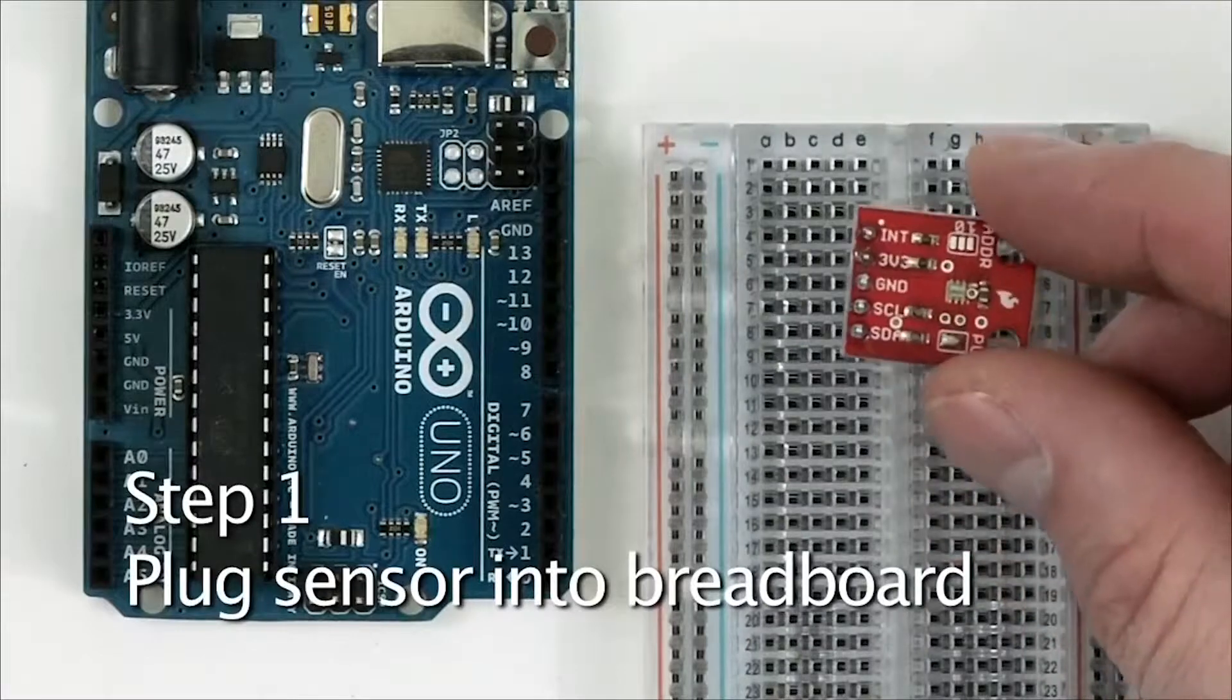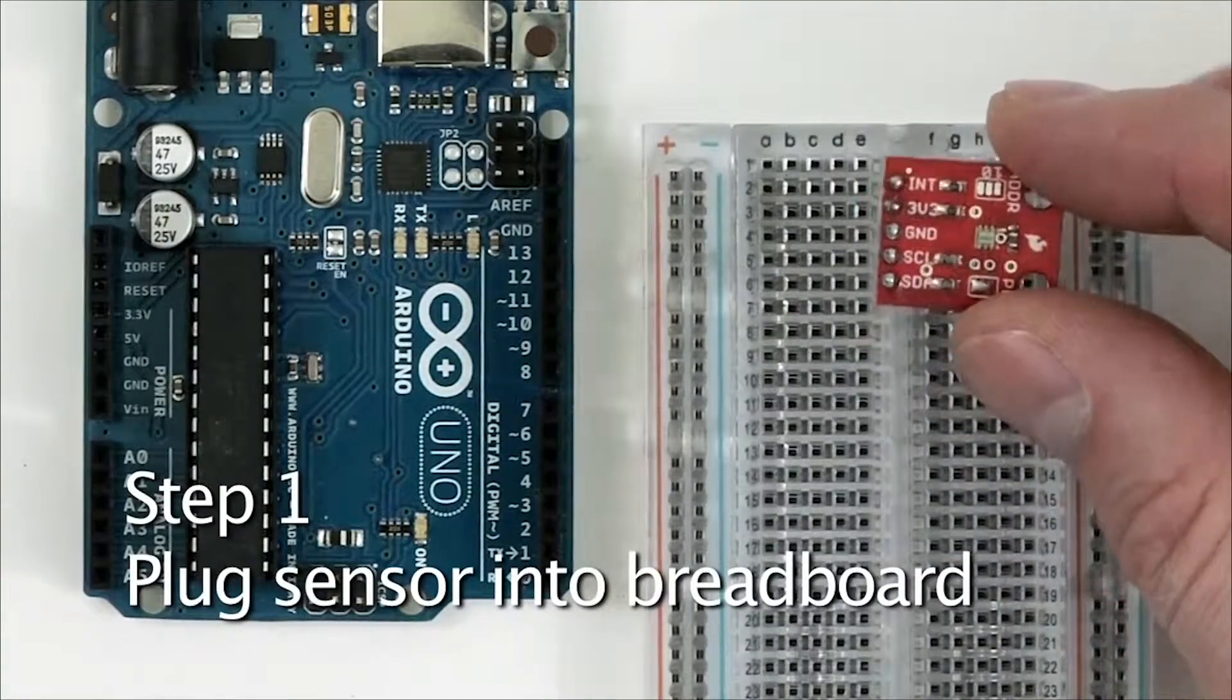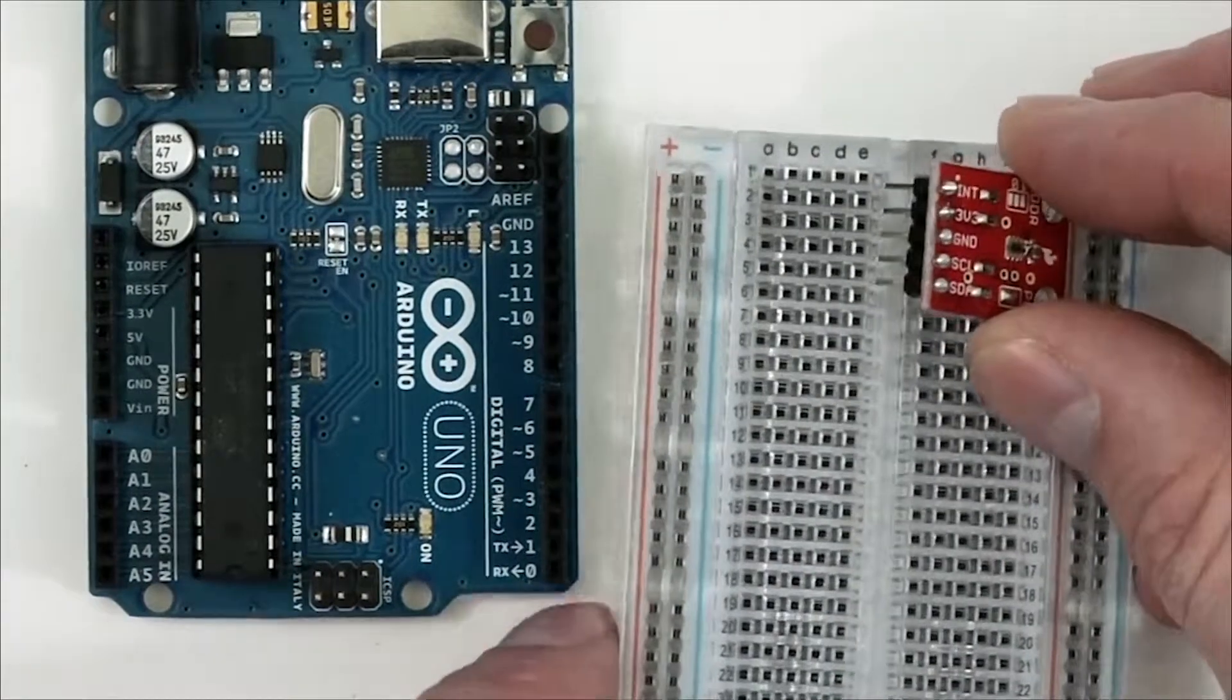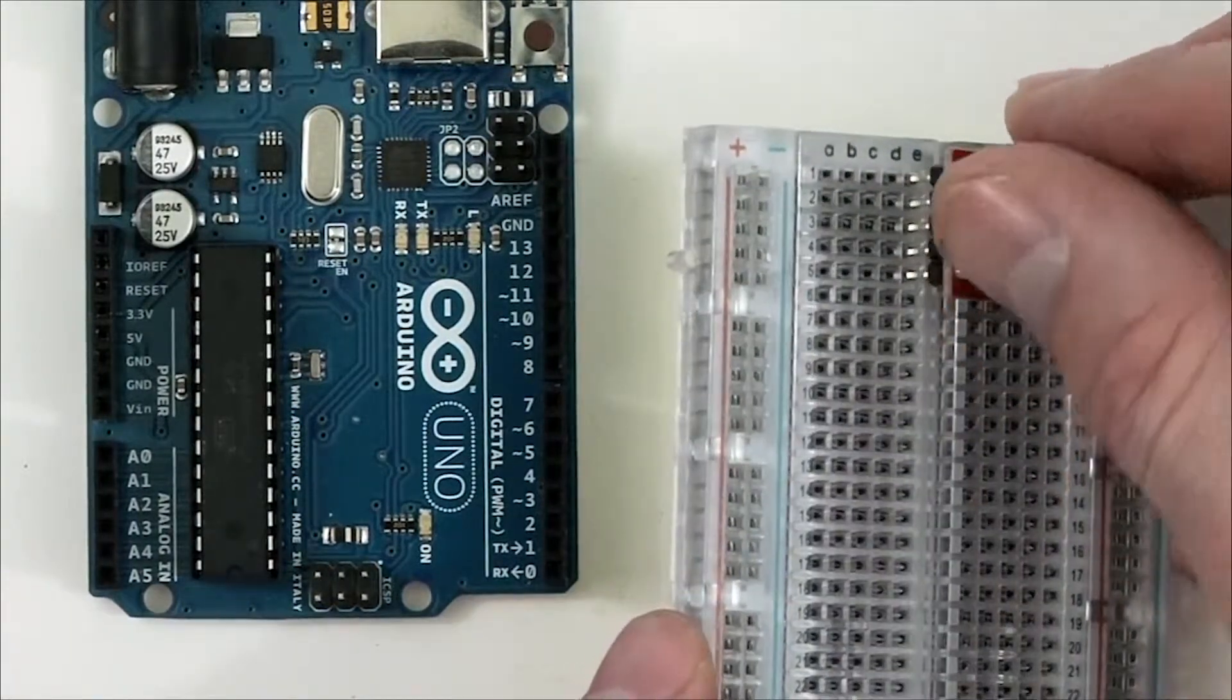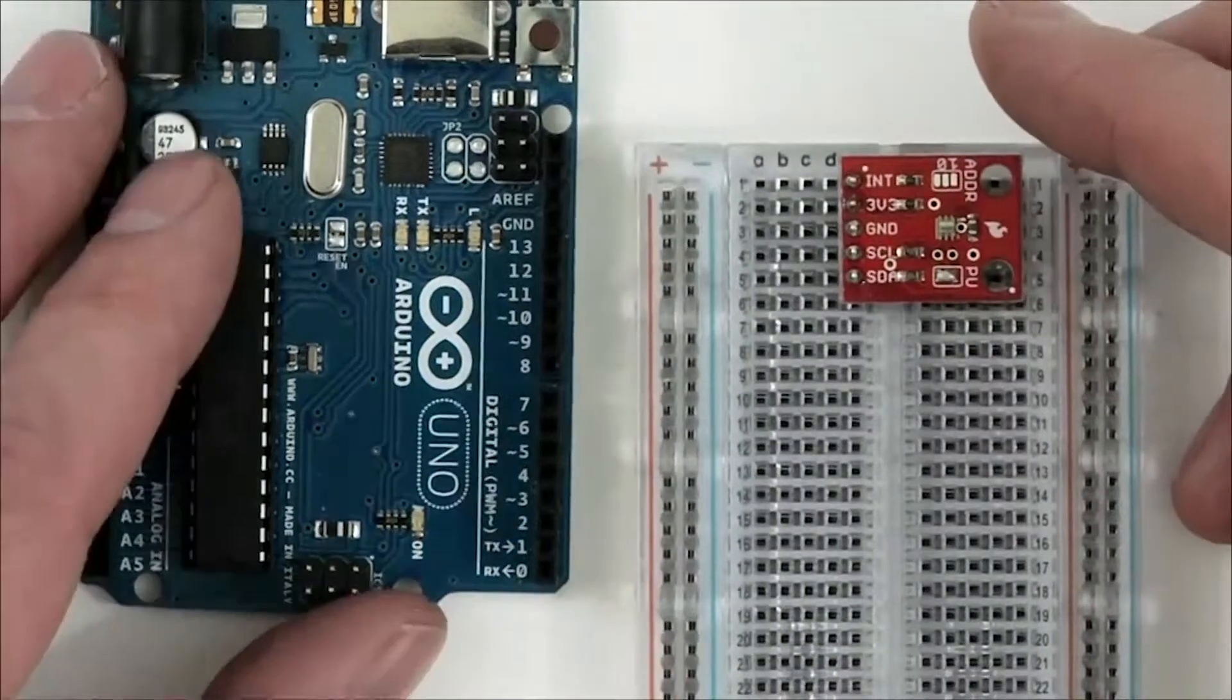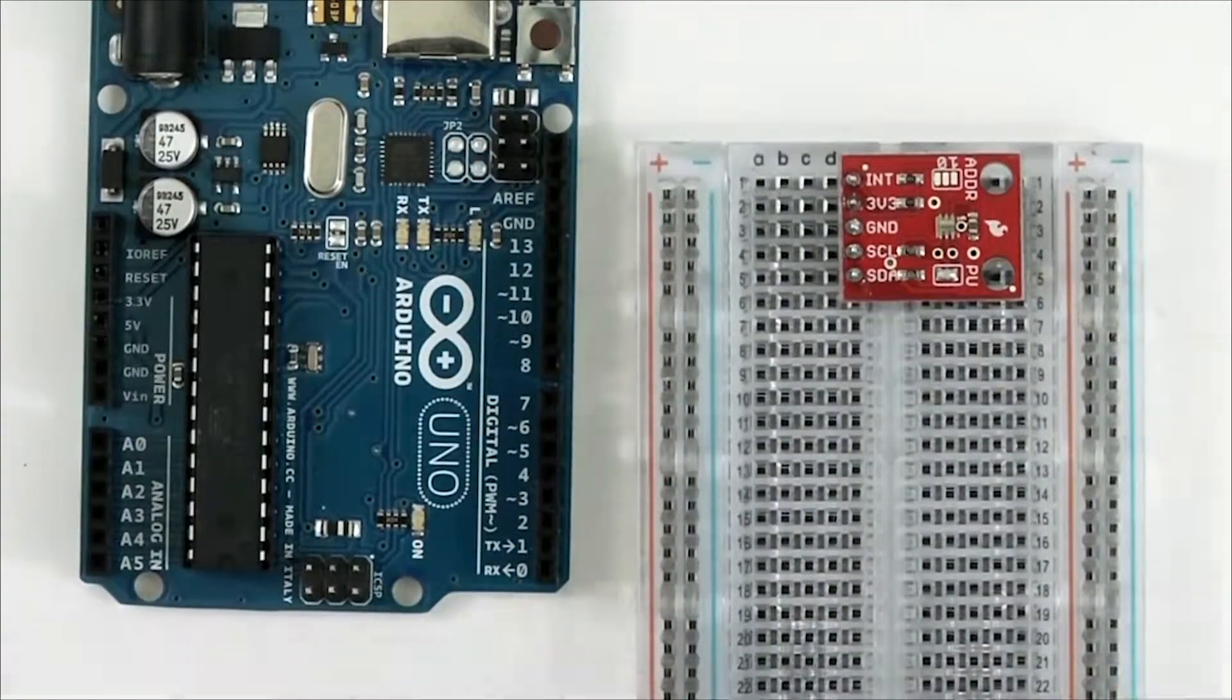We'll start by plugging the sensor into the breadboard. Take the row of pins and put them into the E column on the breadboard so that the INT pin is on row number one and the SDA pin is on row number five.